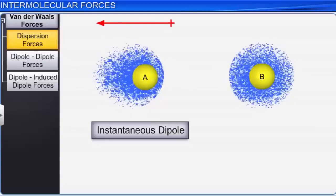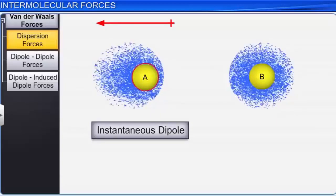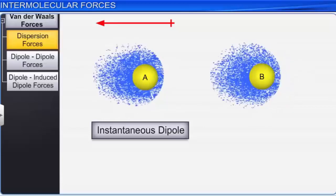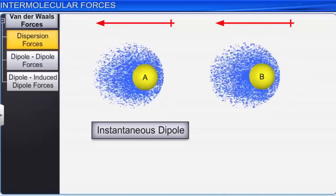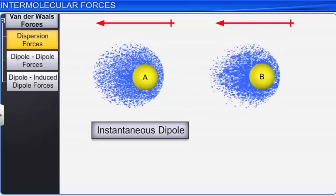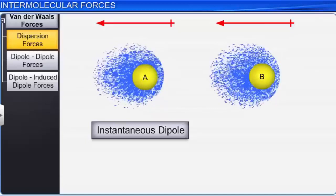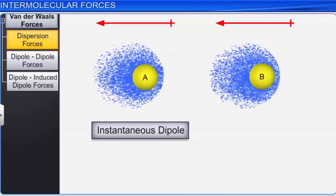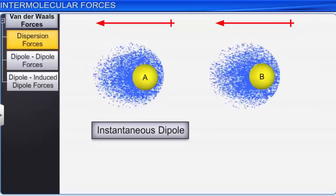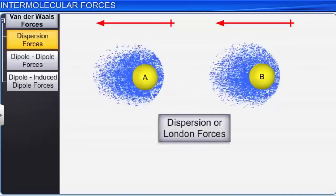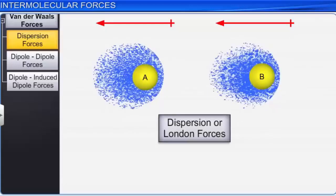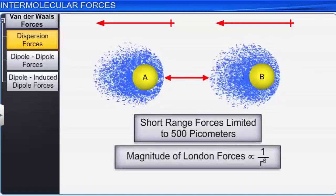This instantaneous or transient dipole distorts the electron cloud on the other atom, that is atom B, which is close to it. As a result, a dipole is induced in atom B. The temporary dipoles of atom A and B attract each other. This force of attraction between the two temporary dipoles is known as dispersion force or London force. This force is important only at short distances, limited to 500 picometers, and is inversely proportional to the sixth power of the distance between the two molecules.